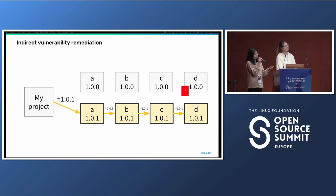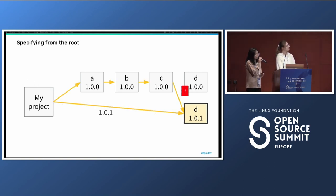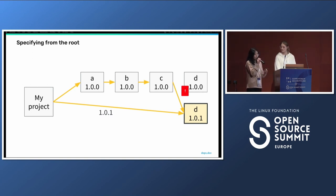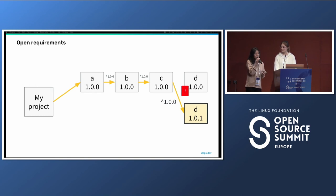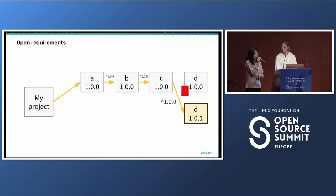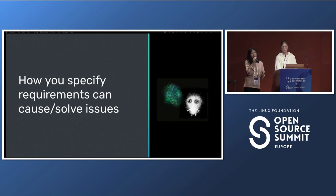There are some other solutions to this problem. In Go, rather than needing new versions of all intermediate packages to be published, you can directly specify the patched version of the deep dependency from your own project — no new versions of A, B, or C need to be published, your project just specifies D at the patched version. Another solution in ecosystems like NPM is to use open requirements, particularly the tilde and caret operators. The flexibility of the requirement on D from C would automatically pick up the fixed version.